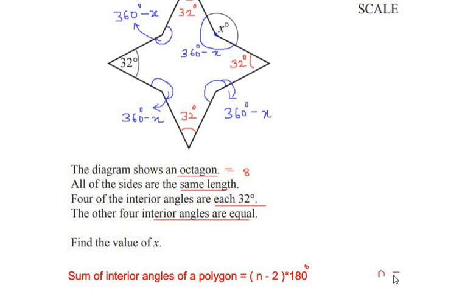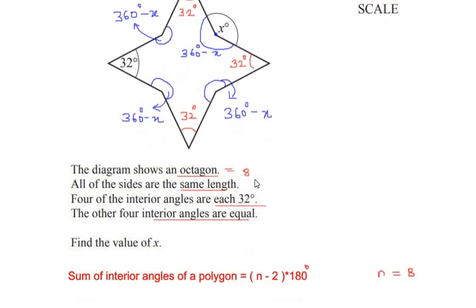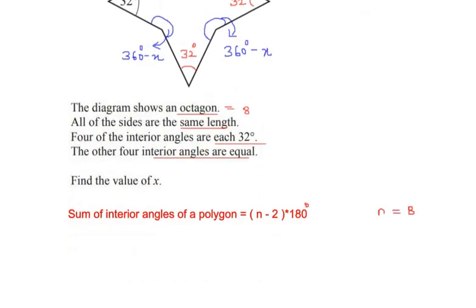Now sum of interior angles in this given figure, we can see that there are four angles which are 32 degrees and there are four interior angles which are 360 minus x. So we can write sum of interior angles of polygon: 4 times 32 plus 4 times (360 degrees minus x) is equal to (8 - 2) times 180 degrees.